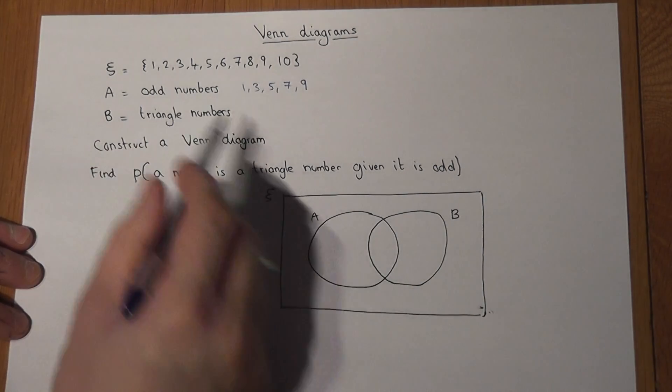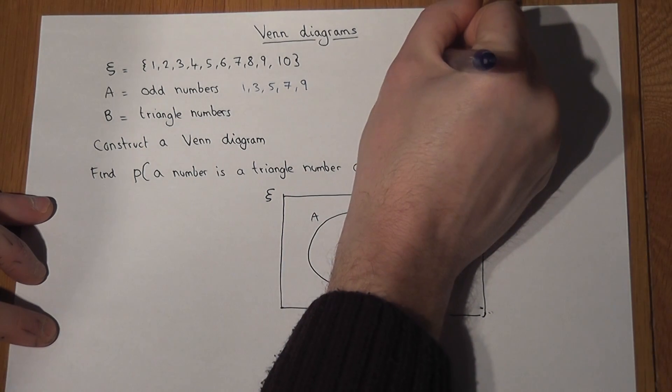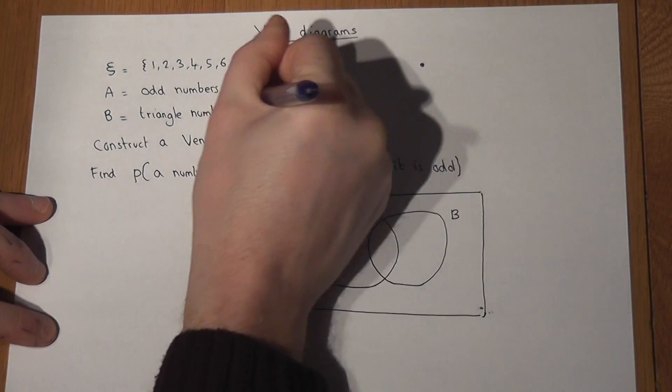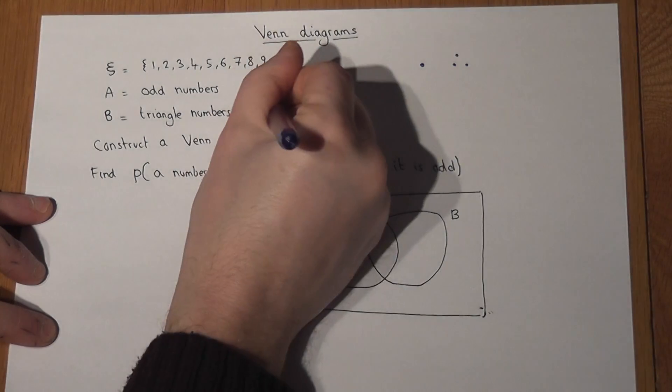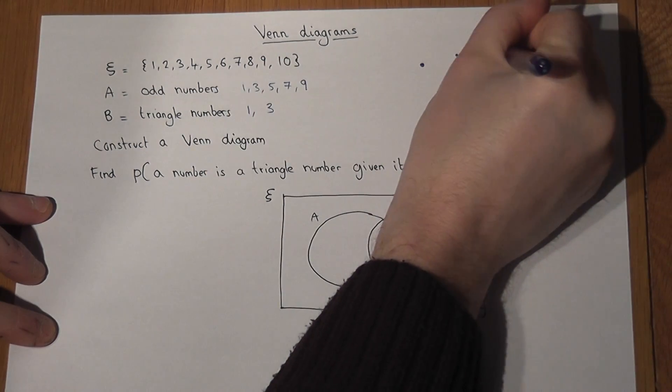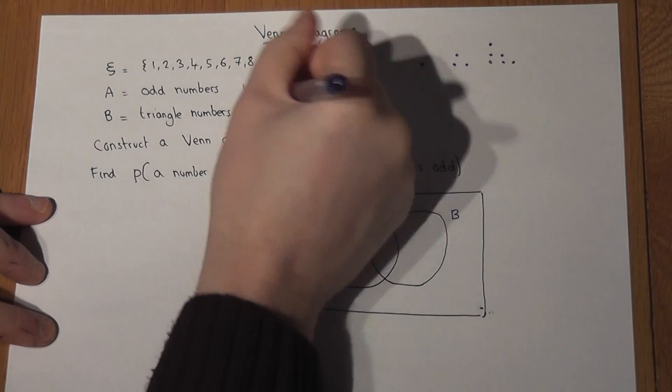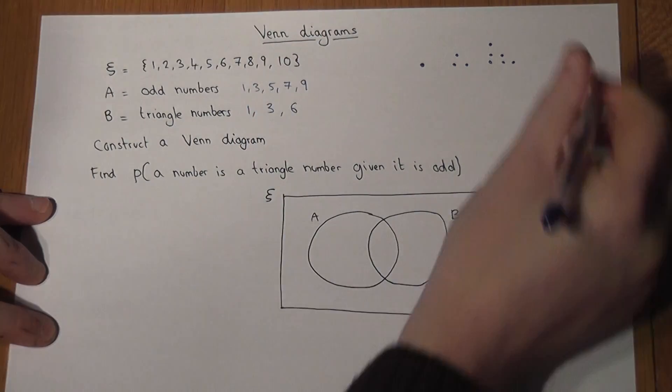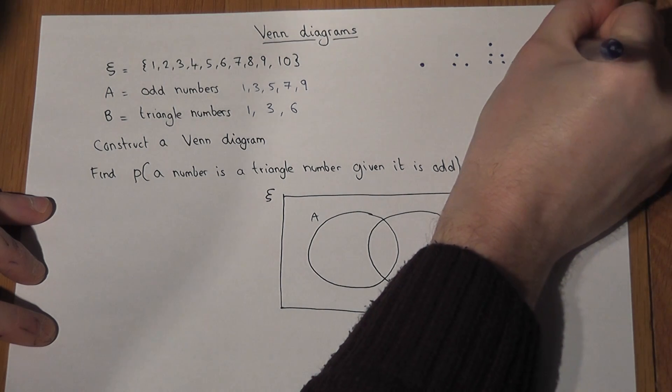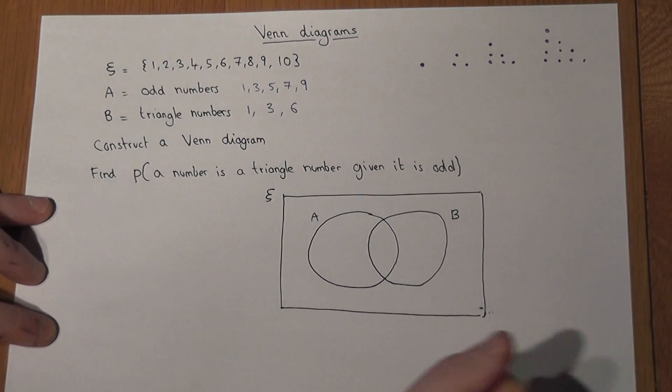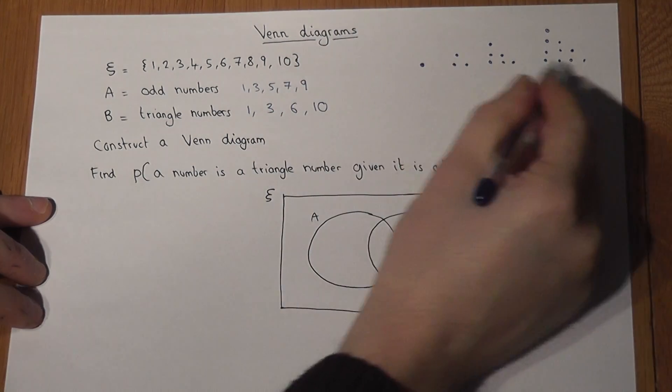And set B are the triangle numbers, which as a reminder, the first one is 1, the second one is 3, then it goes 6, and then the last one is 10. 1, 3, 6, 10.